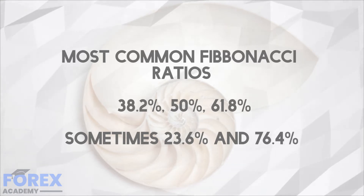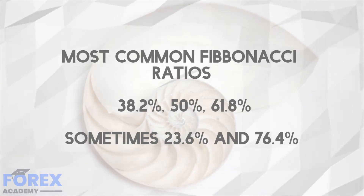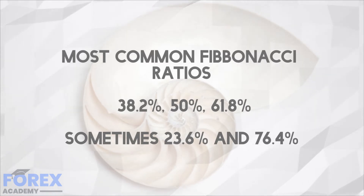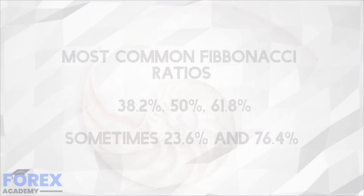In forex, the most commonly used Fibonacci ratios are 38.2%, 50%, and 61.8%. Sometimes 23.6% and 76.4% are used, but these ratios are better known as retracement levels and are used in technical analysis to help traders establish support and resistance levels and areas where a trade might turn in direction.